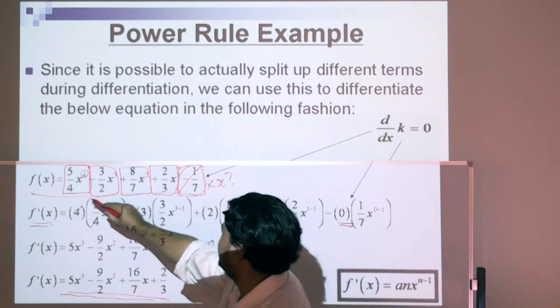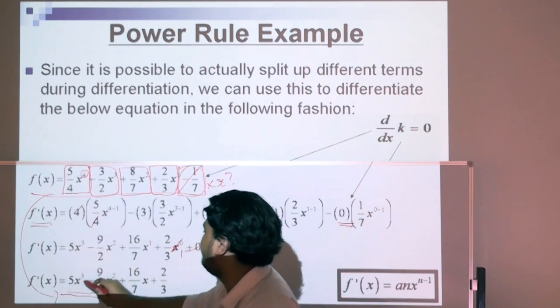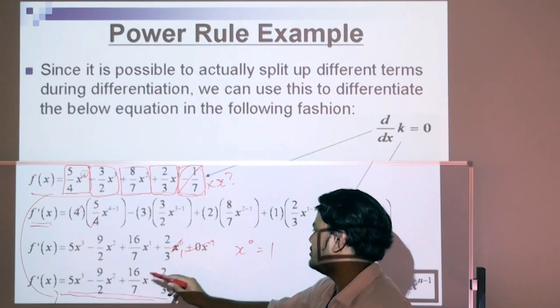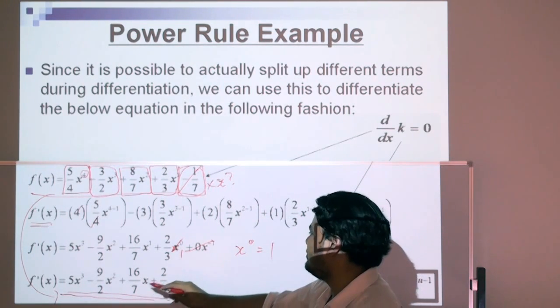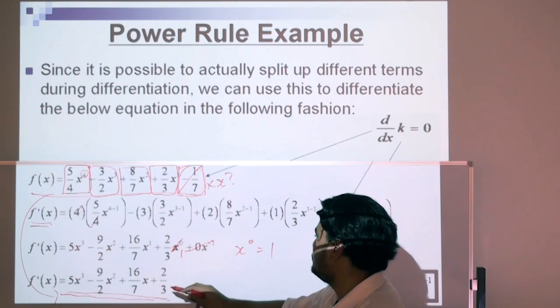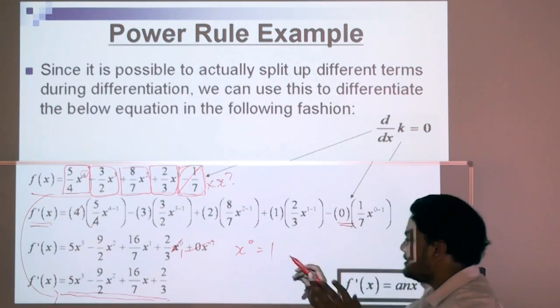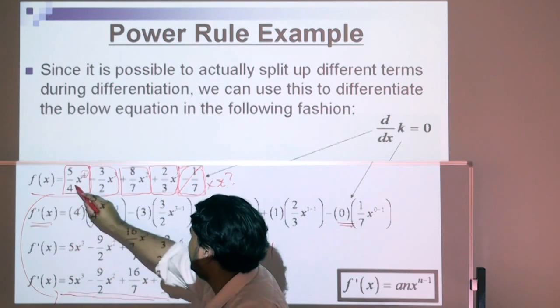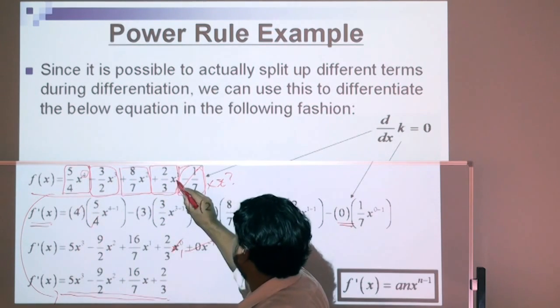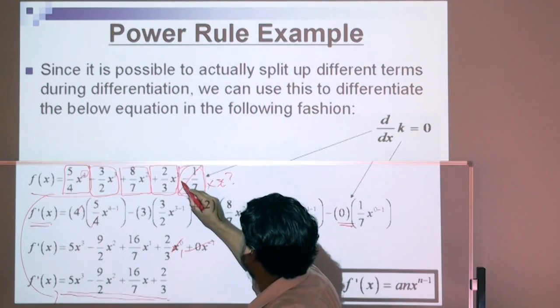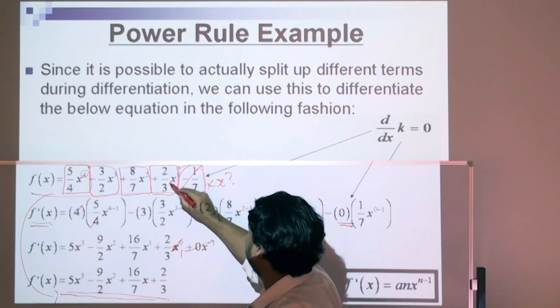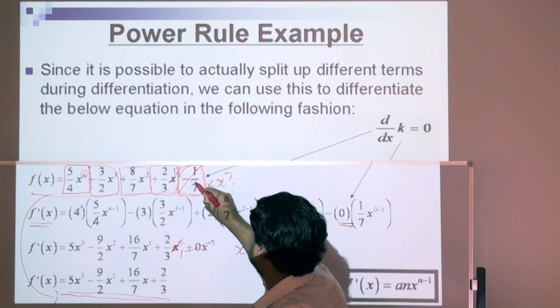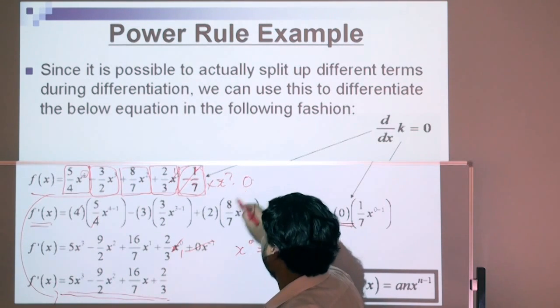That's our final answer right here. The derivative of this function is 5x to the power of 3, minus 9 over 2 x squared, plus 16 over 7x, plus 2 over 3. All we did here, we move that 4 there, multiply by that, and notice that when the power of x was 1, all we did was make that equal to 1, that became 2 over 3, and the constants become 0.